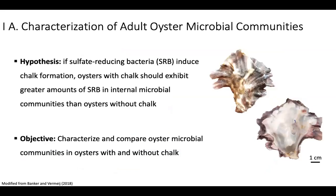The first part I'll talk about is the characterization of the adult oyster microbiome. My hypothesis is that if sulfate-reducing bacteria induce chalk formation, oysters with chalk should exhibit greater amounts of sulfate reducers in their shell than oysters that do not produce chalk. My objective was to characterize and compare oyster microbial communities in oysters with chalk versus those without chalk.